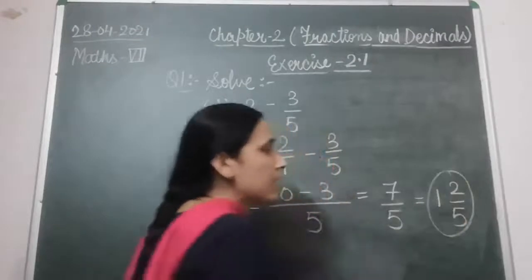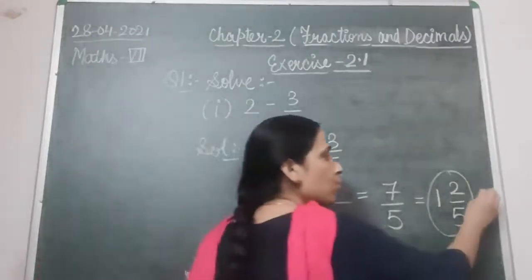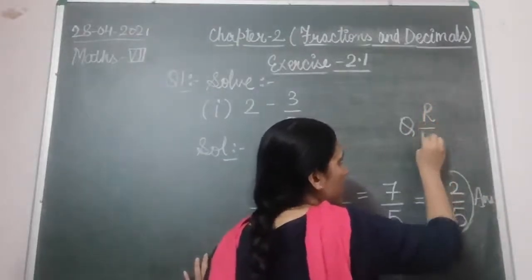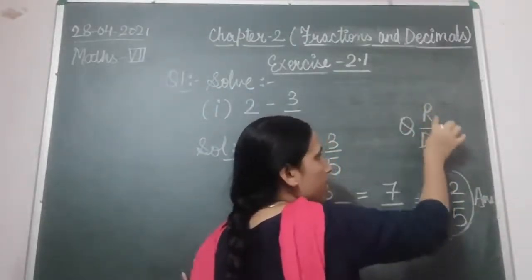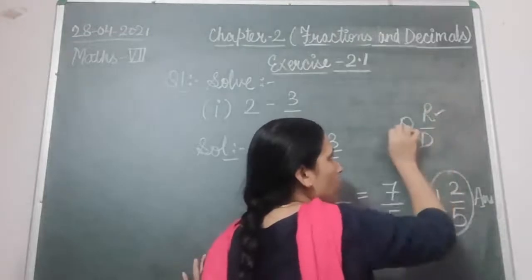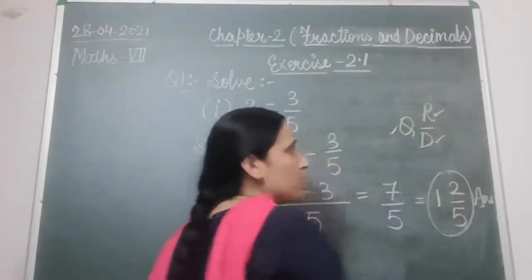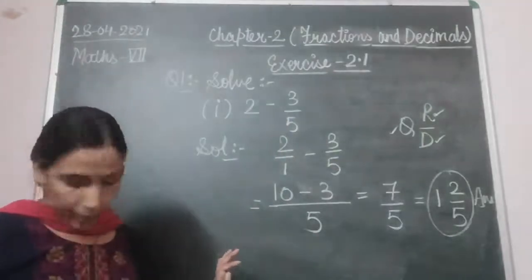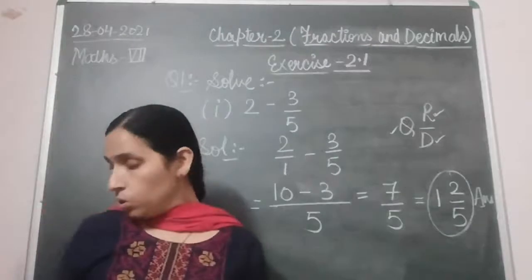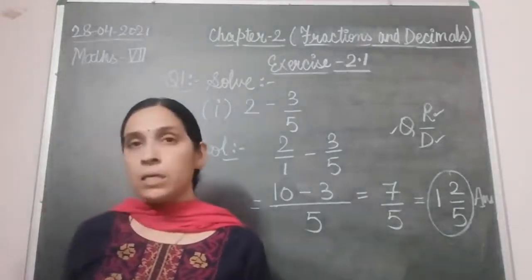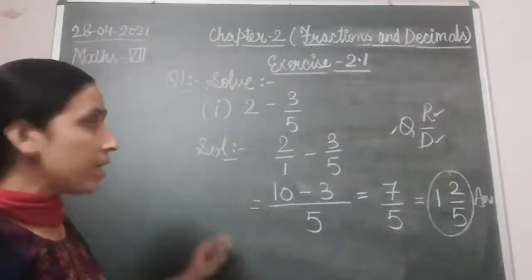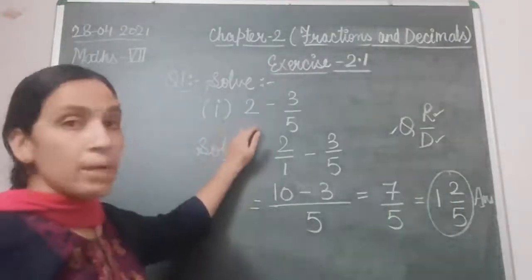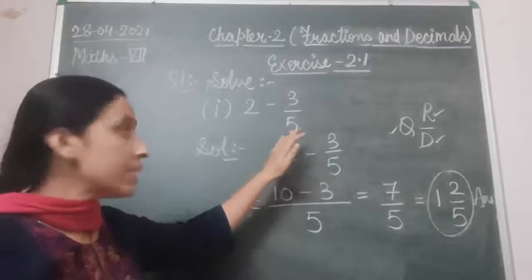Summary of first part: from whole number 2, subtract 3/5. First step: write 1 in the denominator of the whole number — 2/1 minus 3/5. Find LCM of 1 and 5, which is 5. Divide 5 by 1 to get quotient 5, multiply by numerator to get 10. Subtract 3 to get 7/5, then convert to mixed fraction using QRD.